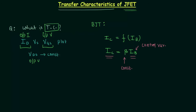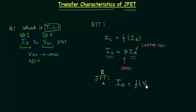But in case of junction field effect transistors, there is no linear relationship between the output and input quantities. We already know the drain current is a function of voltage VGS, and the relationship between ID and VGS is defined by Shockley's equation.